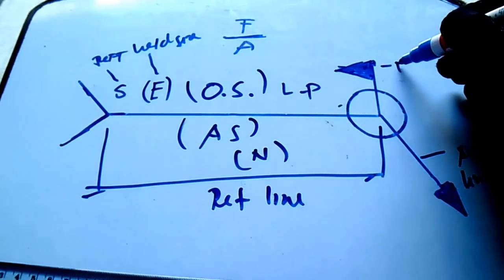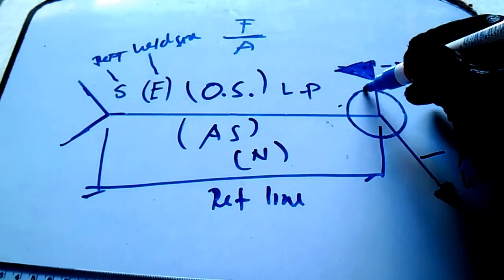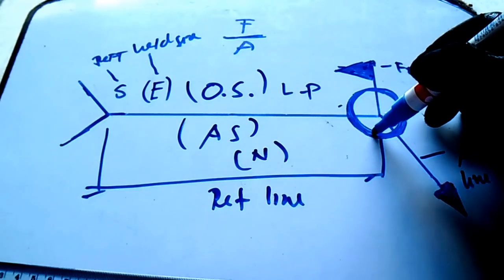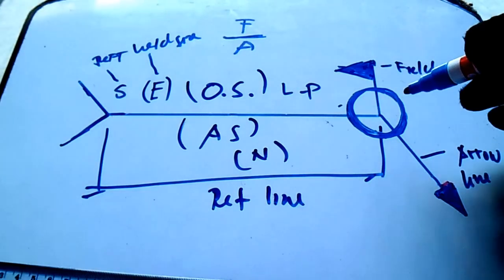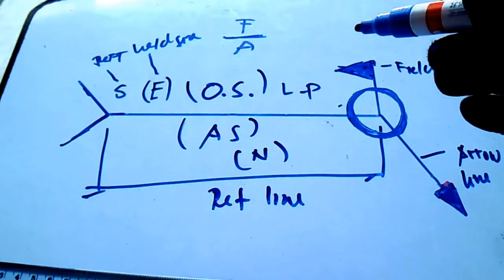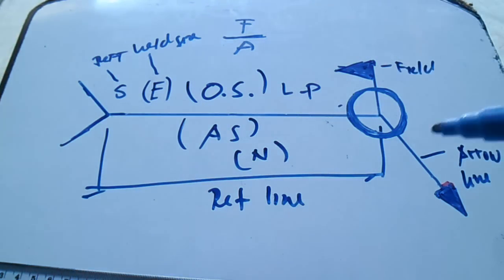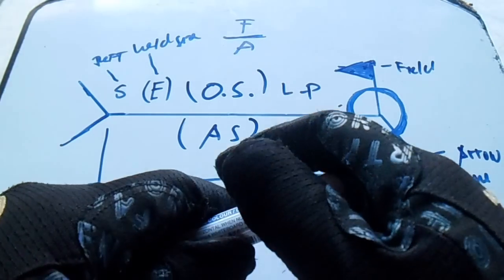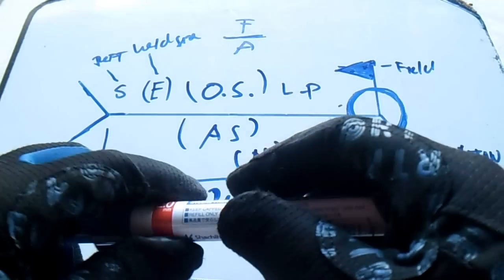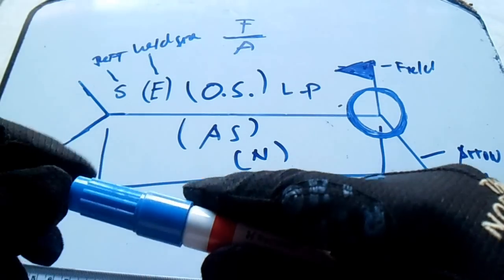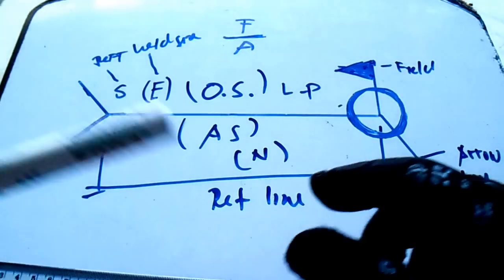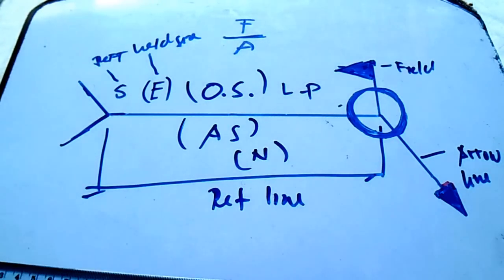We also have the weld-all-around symbol and the field weld symbol. The flag indicates a field weld symbol, and the circle indicates weld all around. These are very important symbols to understand when fabricating structural elements and supports.